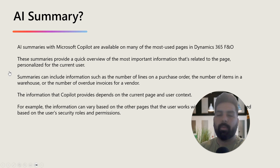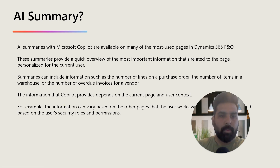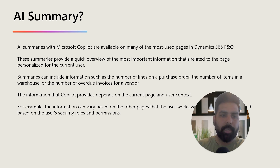The information that Copilot provides depends on the current page and the user context. For example, the information can vary based on the other pages that the user works with most, and it is limited based on the user's security roles and permissions.